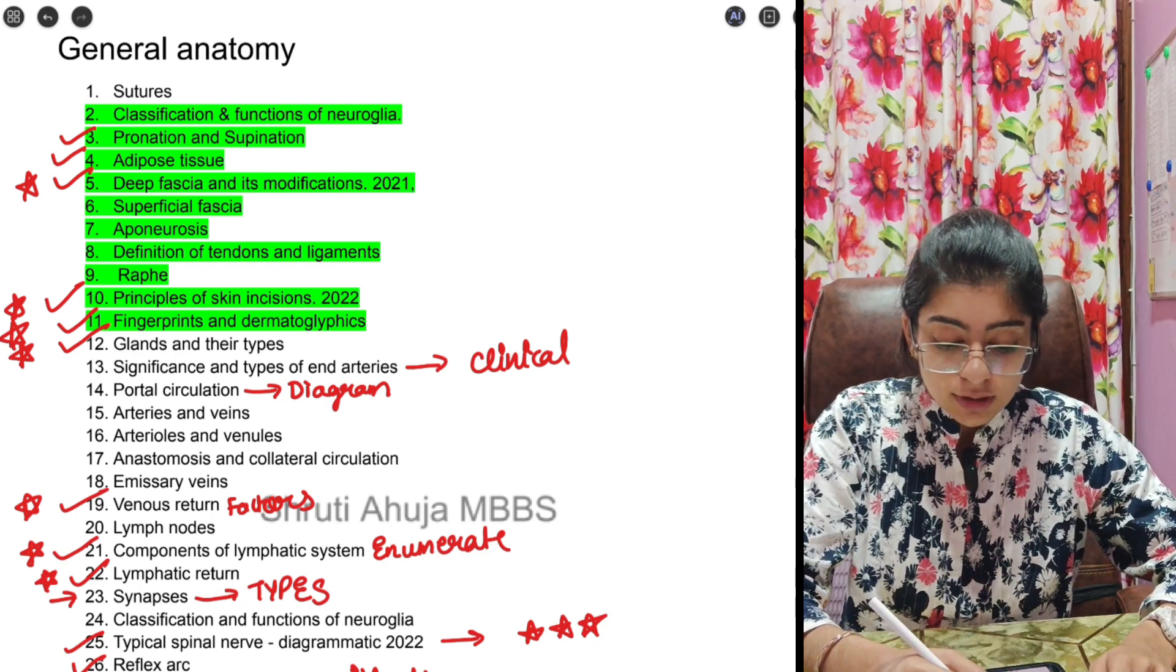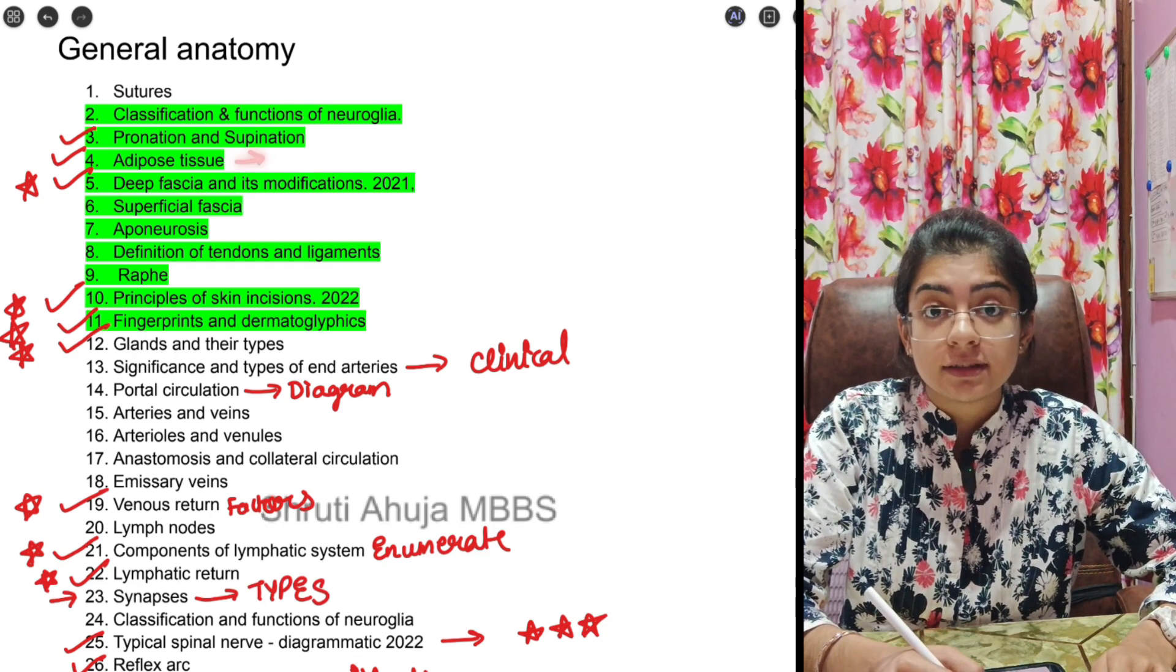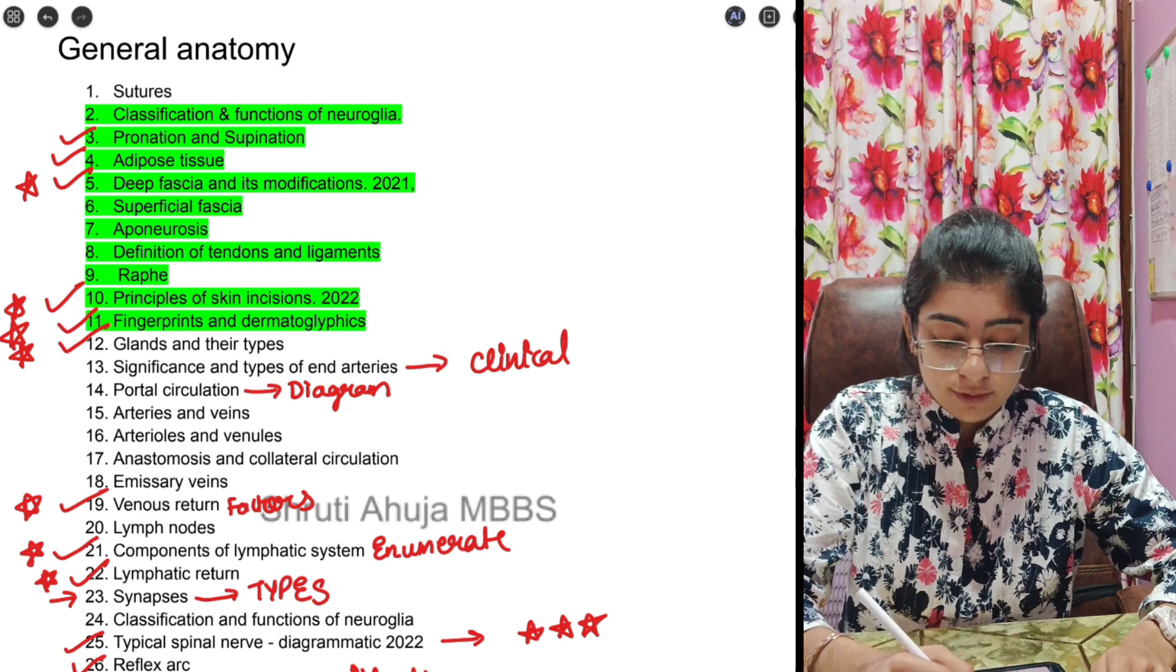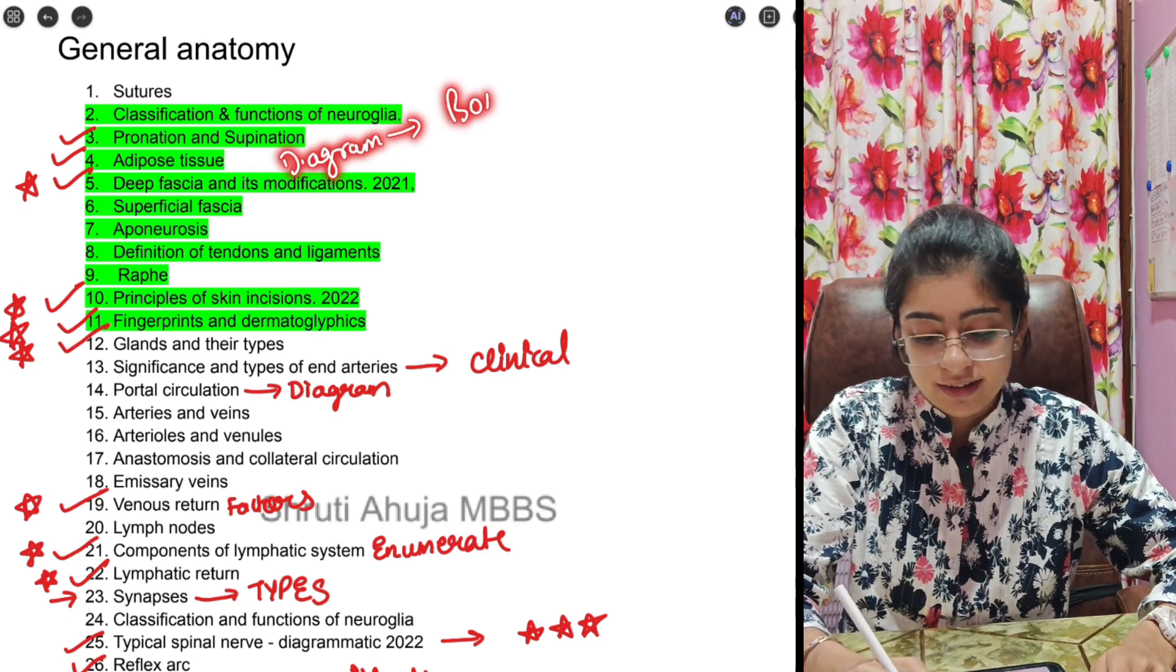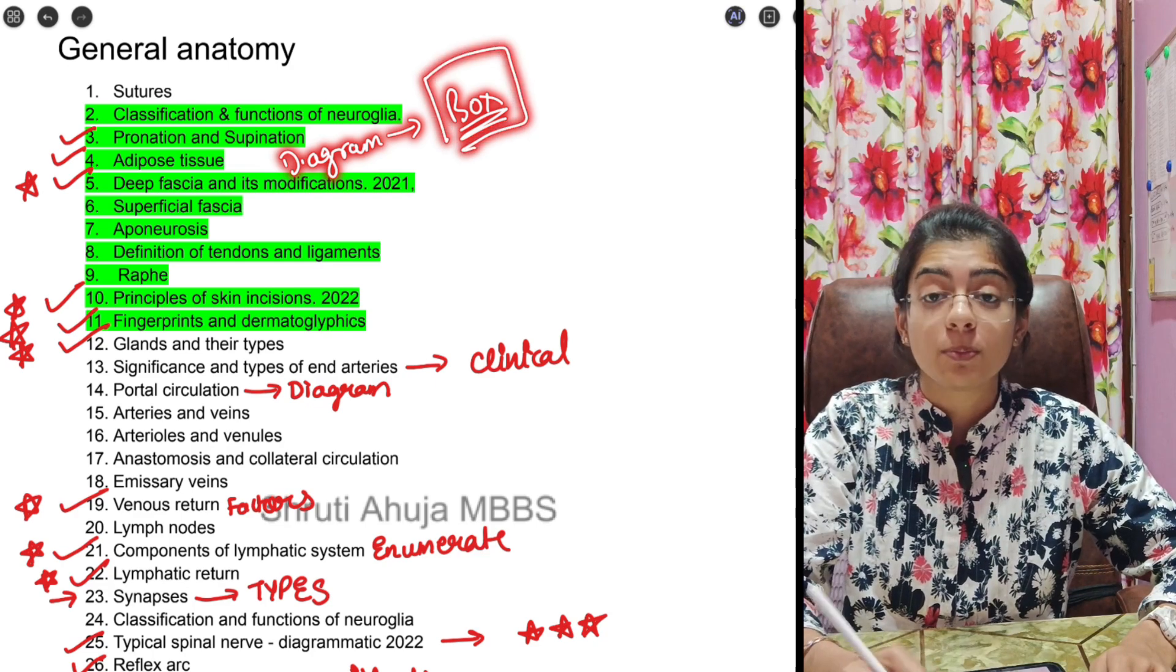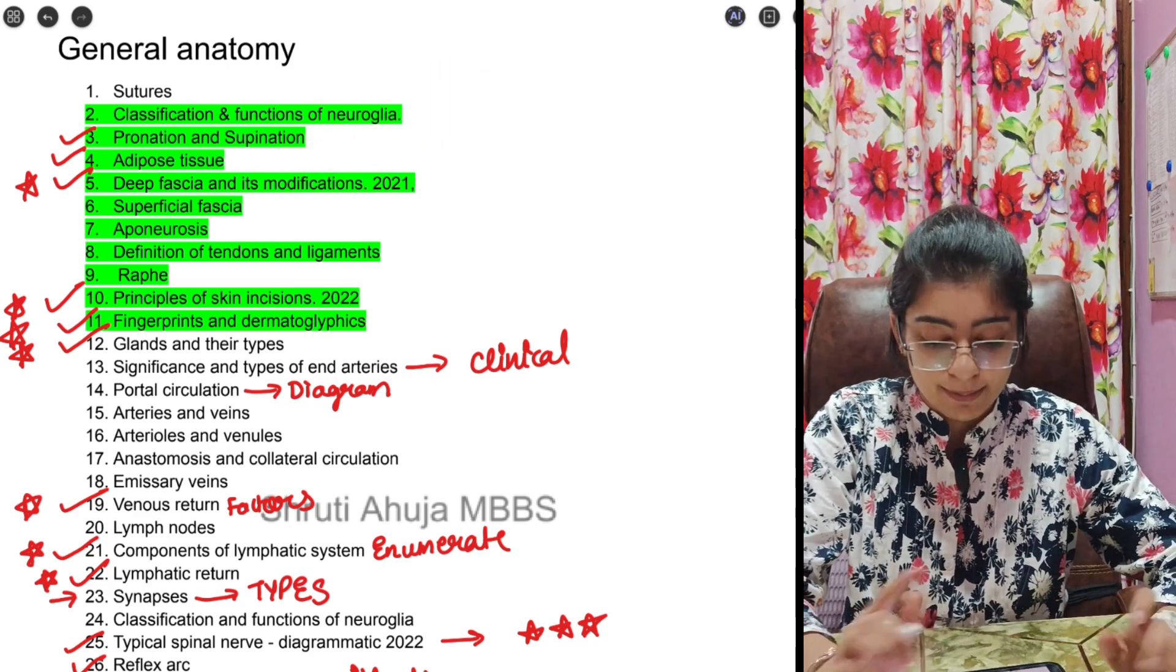Next is adipose tissue. Here we can't add a difference. So what do we do? We add a diagram, and the diagram should be in a box with proper one side labeling, not haphazardly.